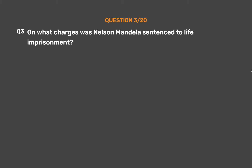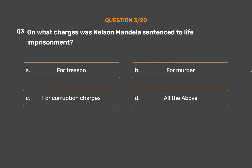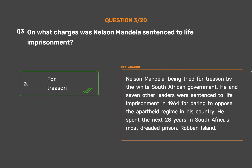Question 3: On what charges was Nelson Mandela sentenced to life imprisonment? Option A: For treason. Option B: For murder. Option C: For corruption charges. Option D: All the above. The correct answer is Option A: For treason. Nelson Mandela was tried for treason by the white South African government. He and seven other leaders were sentenced to life imprisonment in 1964 for daring to oppose the apartheid regime. He spent the next 28 years in South Africa's most dreaded prison, Robben Island.